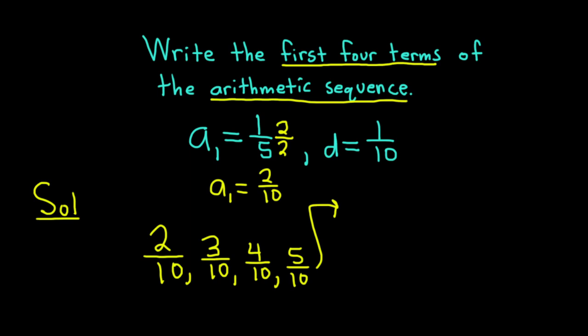So instead of 2 over 10, we can think of this as 1 over 5 by reducing it. And 3 over 10 is just 3 over 10. 4 over 10 is really 2 over 5. And 5 over 10 is 1 half.